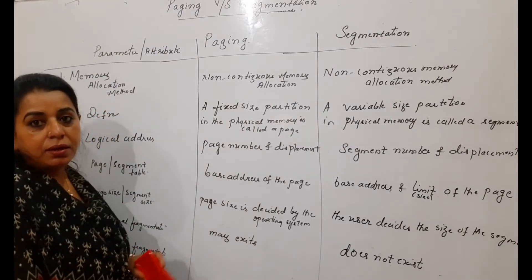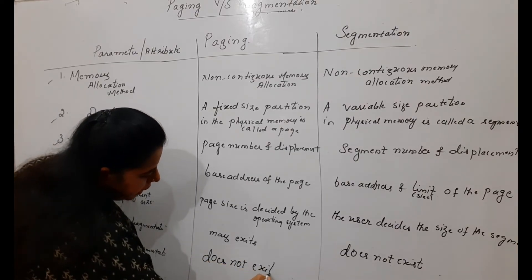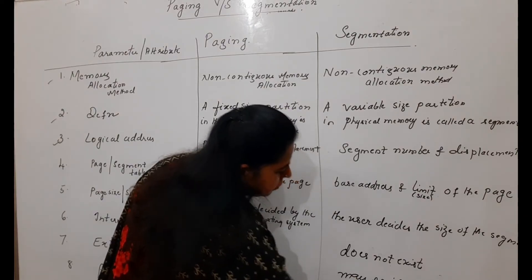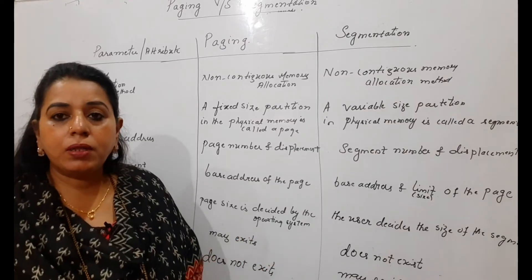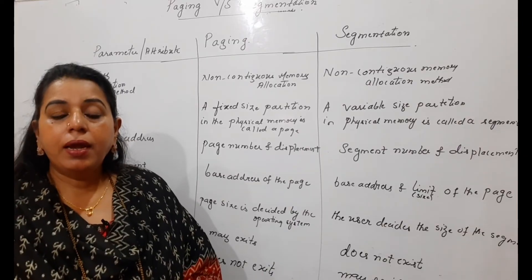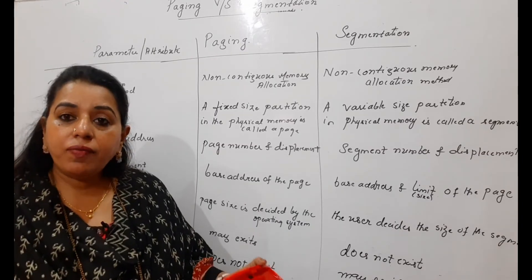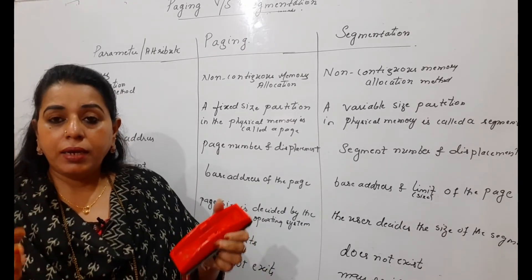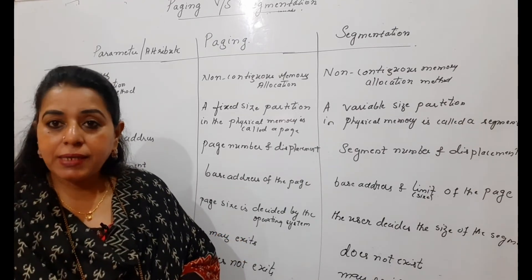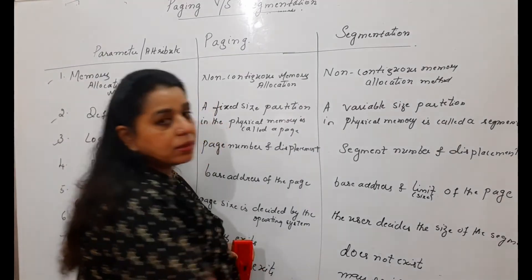External fragmentation in paging does not exist. Whereas in segmentation it may exist. Since segments are of variable size and placed at different parts in main memory, when segments of a second process need to be loaded, there may be sufficient total space but not arranged in a way to accommodate a complete segment. Space is enough but you cannot place the segment — that is external fragmentation.